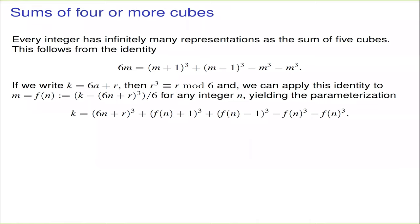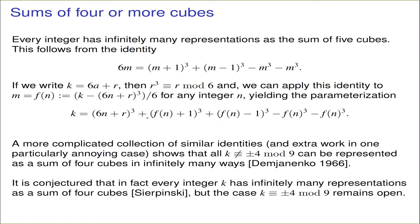Before I get to the main topic of this talk — sums of three cubes — I want to consider the case of sums of more than three cubes, which turns out to be easier. There's a straightforward polynomial identity that immediately tells us that every integer can be represented as a sum of five cubes in infinitely many ways. There's a more complicated series of identities that can be used to represent k as a sum of four cubes, at least when k is not congruent to ±4 mod 9. And it's conjectured that in general there should always be infinitely many ways to represent any integer k as a sum of four cubes, but this is still open when k is ±4 mod 9.